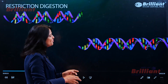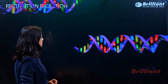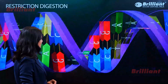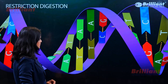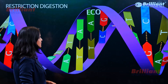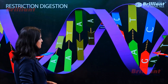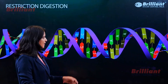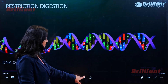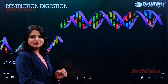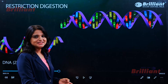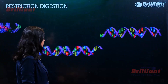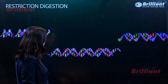As a result of restriction digestion, overhanging stretches are created — you can see that here. That is how restriction digestion works. After another cut, as a result of restriction digestion, we get different-sized fragments, as we have learned. You can see different sized fragments are created.